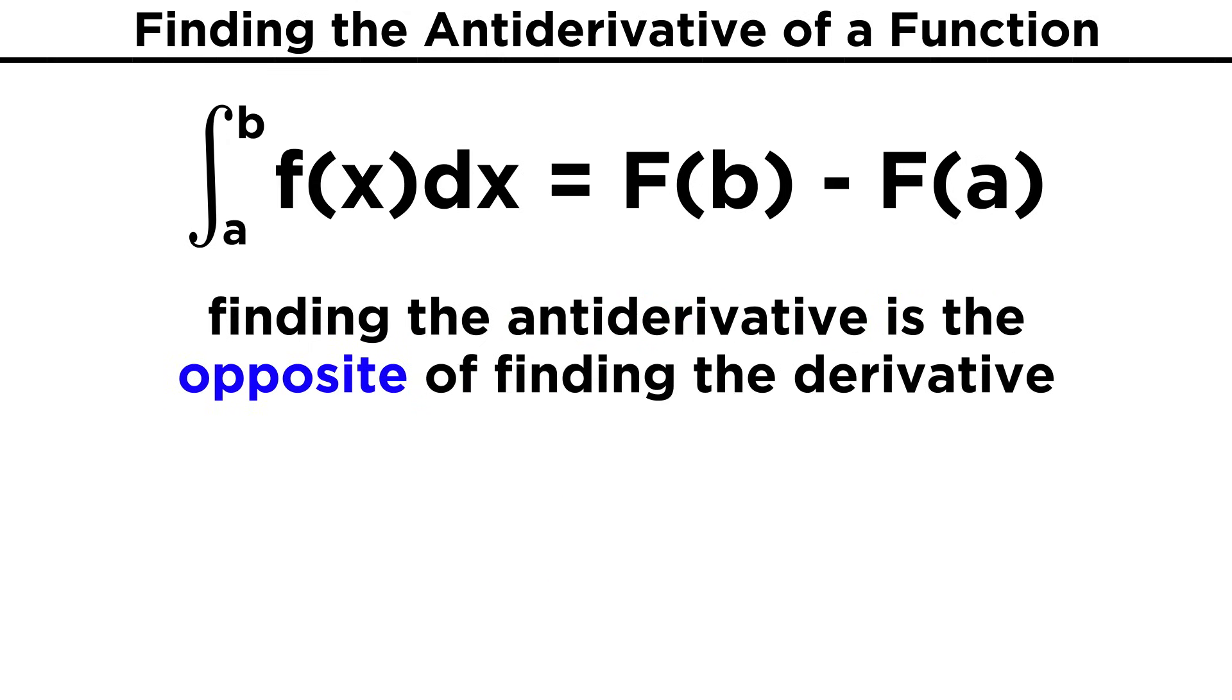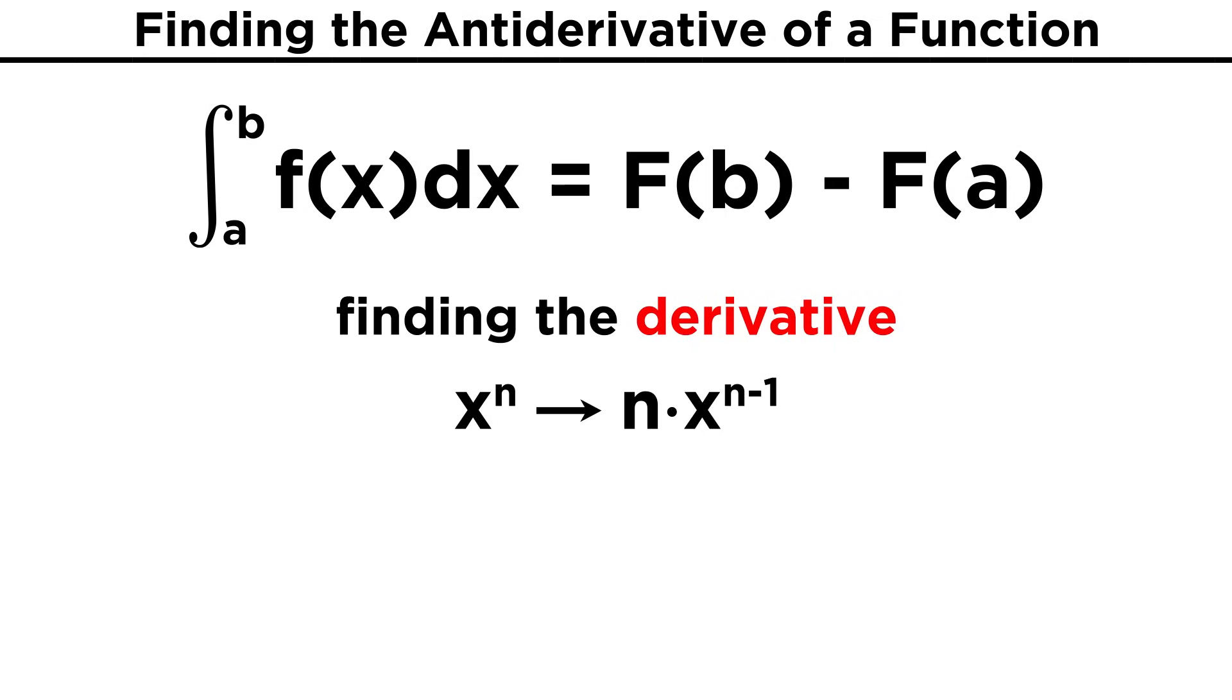In order to get an antiderivative, we are going to have to employ precisely the opposite algorithm of the one that is employed during differentiation. Remember that when we take a derivative, we bring this exponent down here, and then reduce the exponent by one.